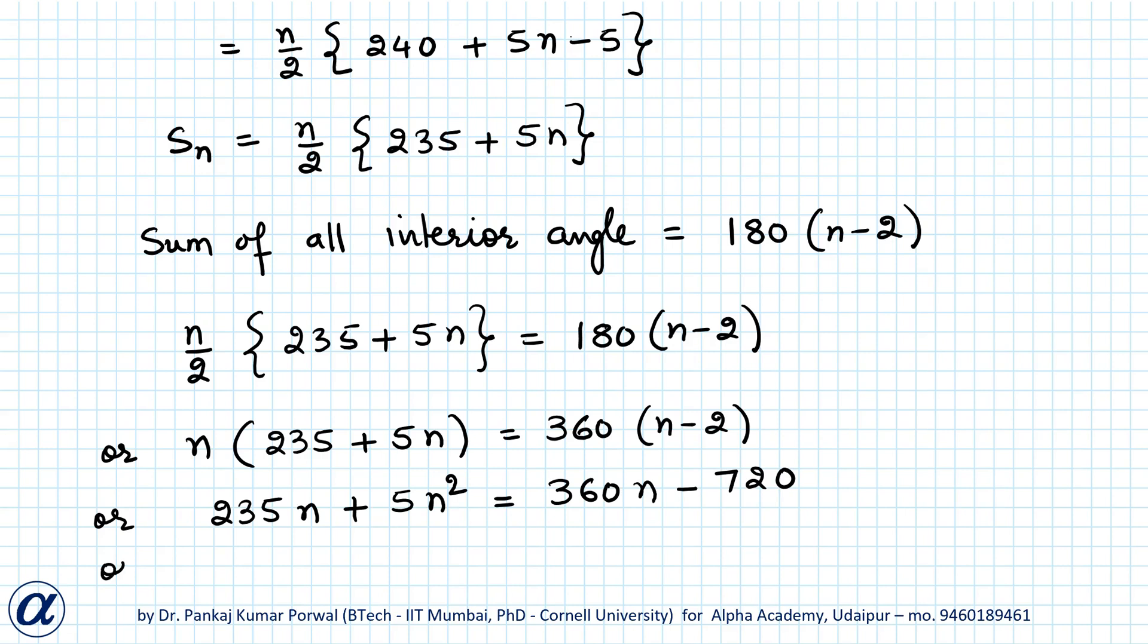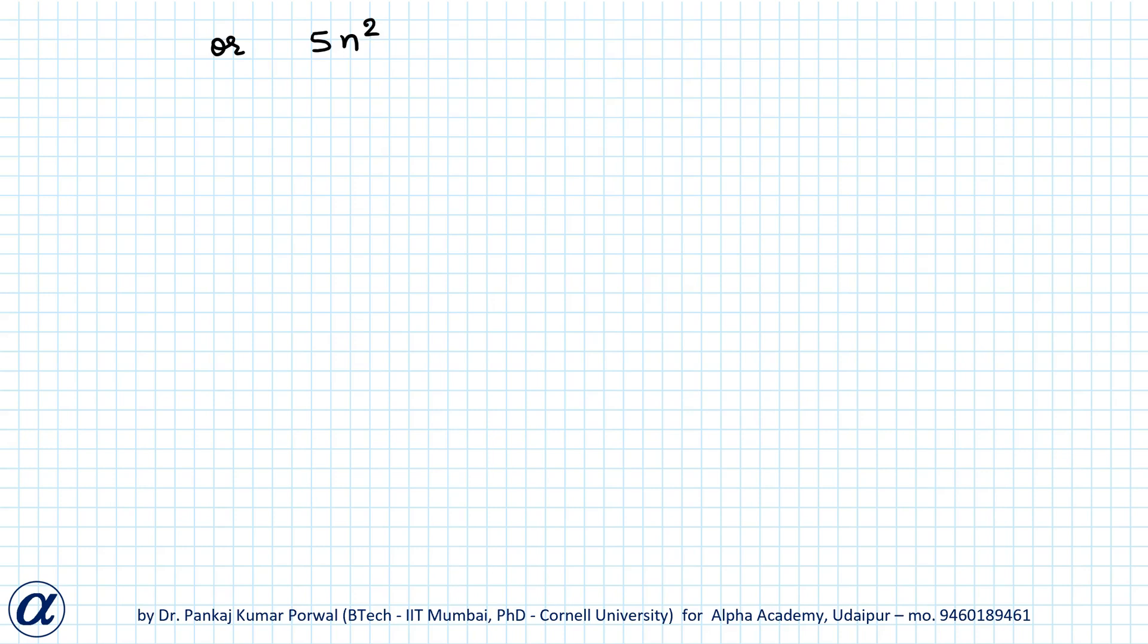I can bring all the terms to the left, so I get 5n squared plus 235n minus 360n plus 720 equals 0, or 5n squared minus 125n plus 720 equals 0. Here I can take 5 common, so I get 5 times n squared minus 25n plus 144 equals 0.